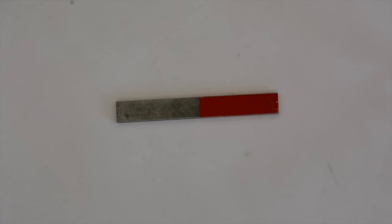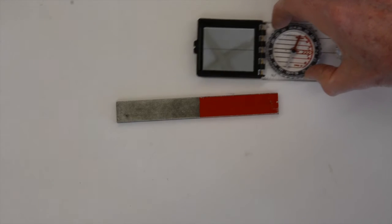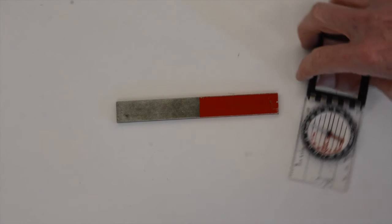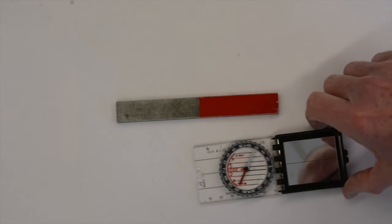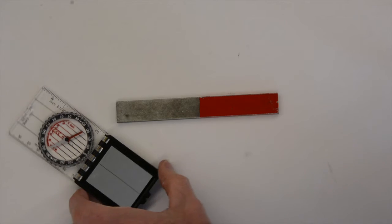A compass needle is a small dipole magnet, and it orients itself in the direction of a magnetic field. So a compass is a convenient device to use to map out a magnetic field. Here we can see around this dipole magnet that the magnetic field really is as depicted in the previous magnetic field diagram.